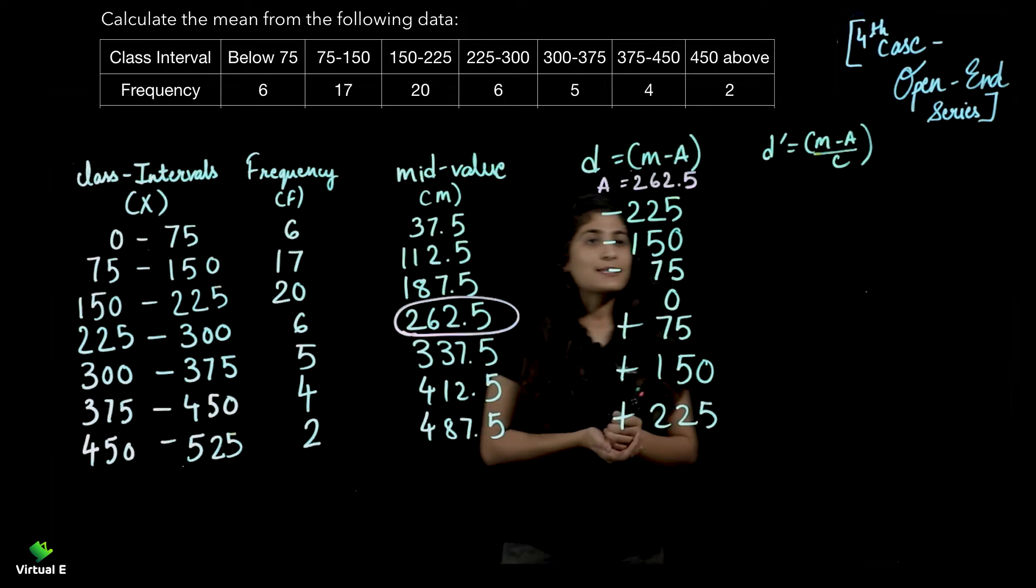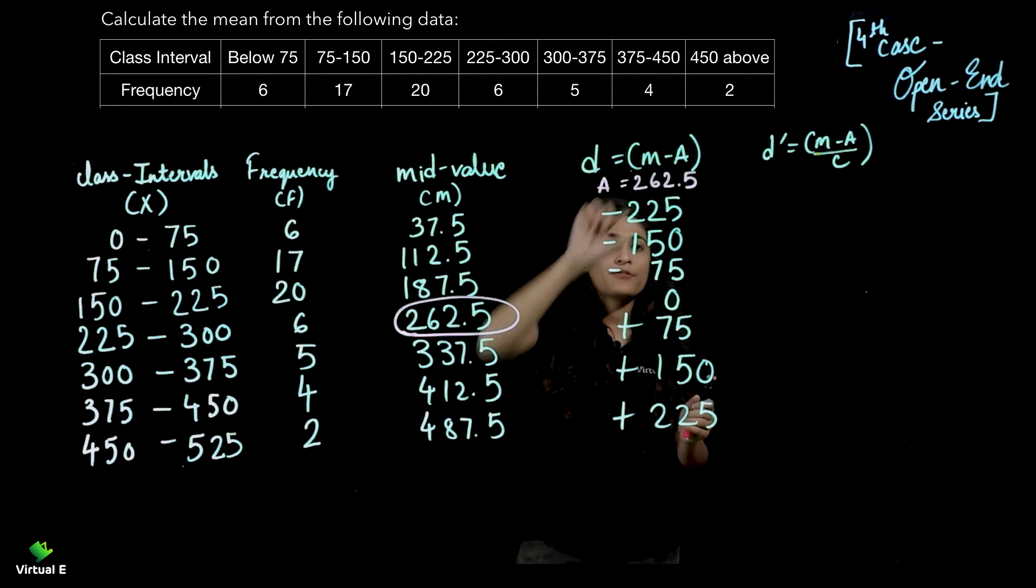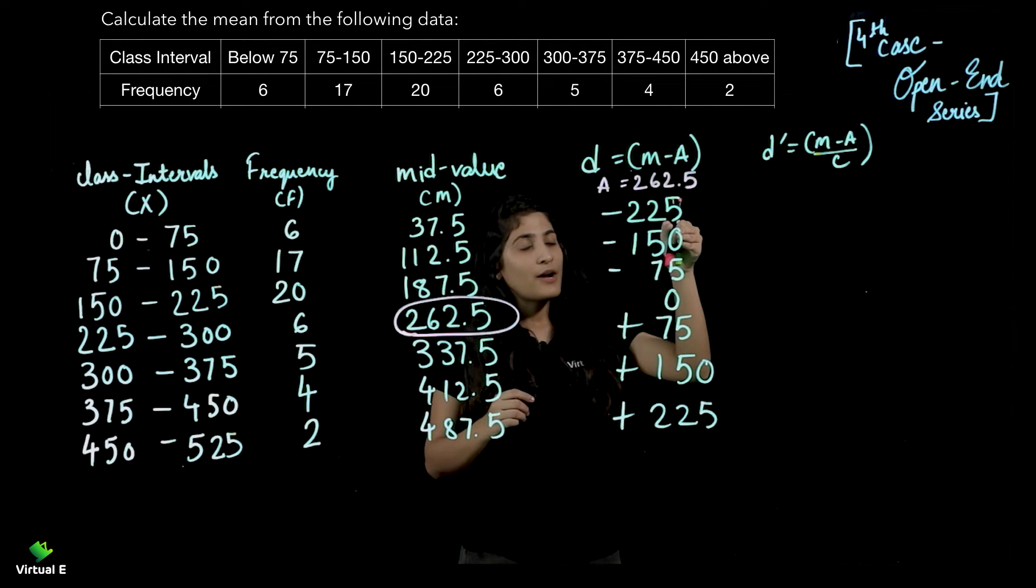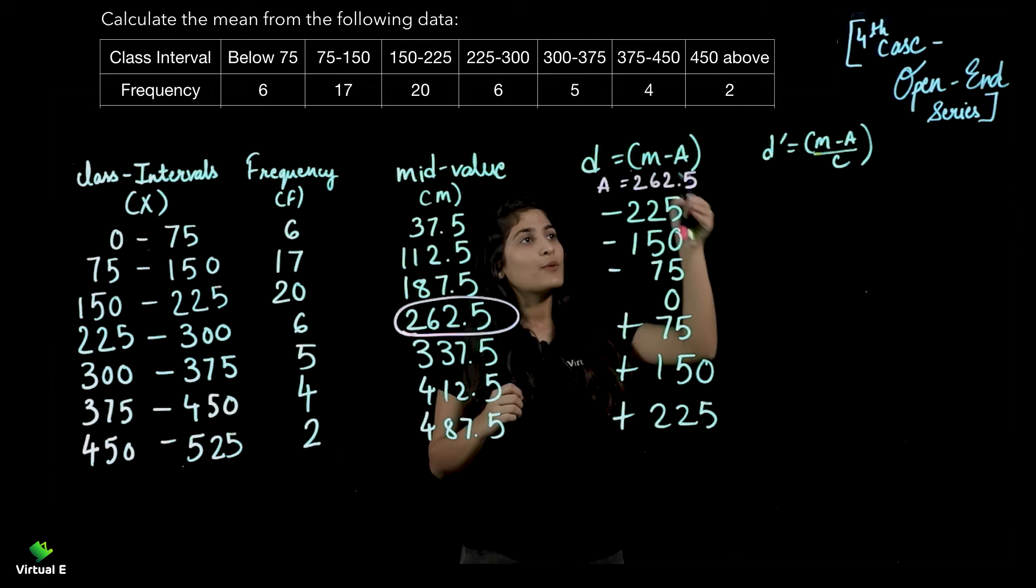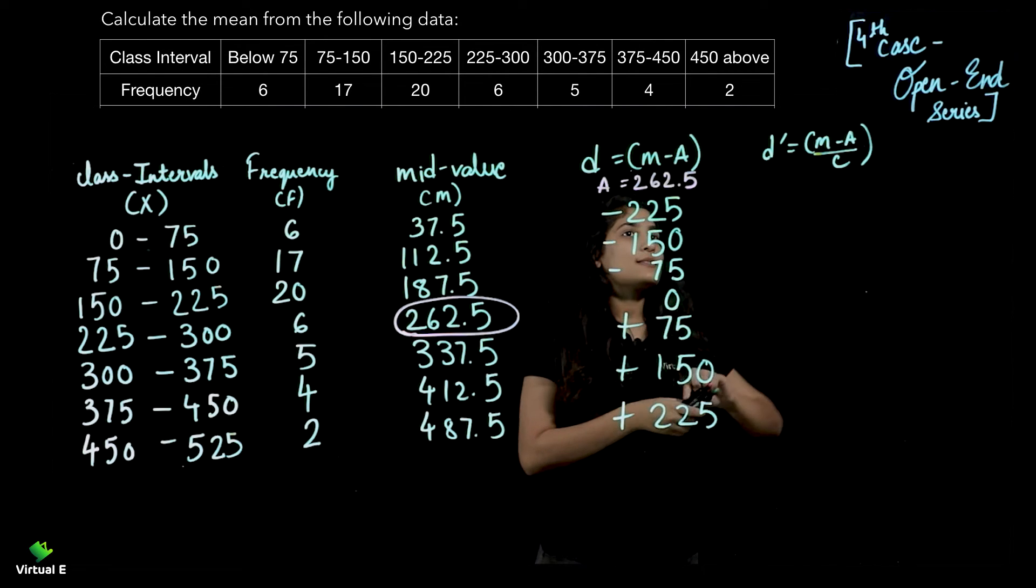Here we can see the class intervals like 75, 150, 225. So 75×1 is 75, 75×2 is 150, and 75×3 will give you 225. So let's consider C as 75.